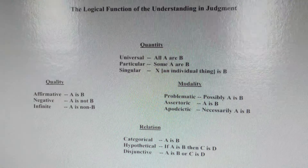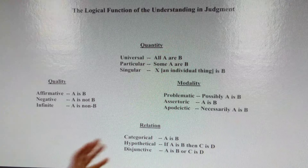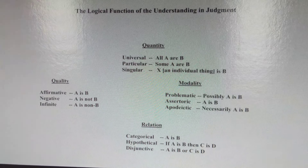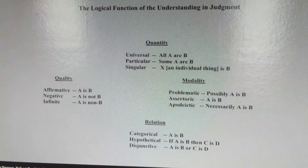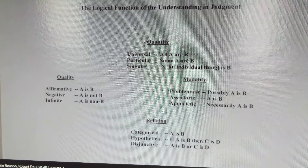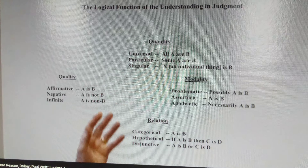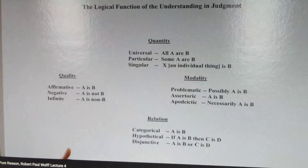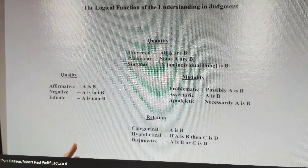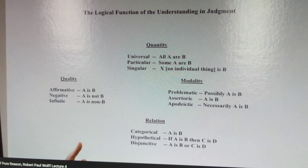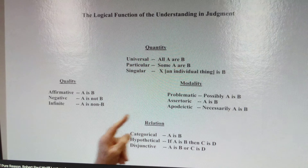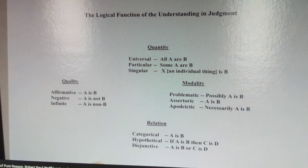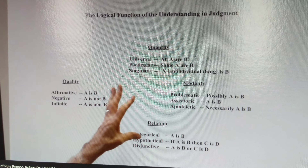All A are B. Some judgments are particular — some A are B. And then Kant says, for epistemological or transcendental purposes, we must add the singular judgment. The singular judgment functions like a universal judgment, but whose subject is the name of an individual thing — X is B, like 'Socrates is mortal,' as opposed to 'all men are mortal.' That's the quantity of judgments.